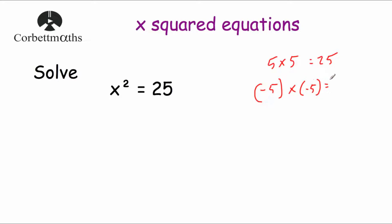So this equation has two solutions: one answer is x equals 5, or another answer is x equals negative 5. We could write that down as x equals 5 or x equals negative 5, and those would be our two solutions for this equation.